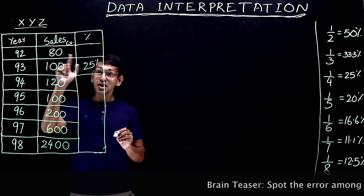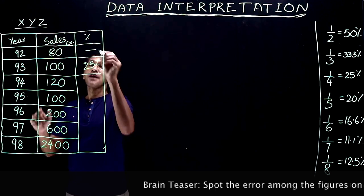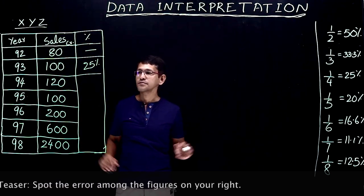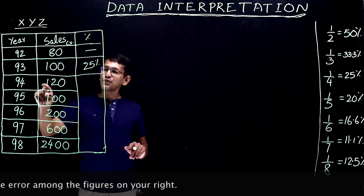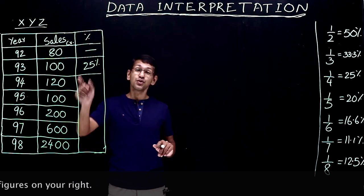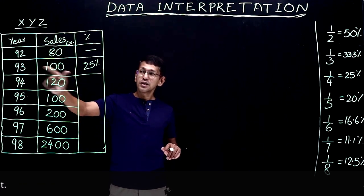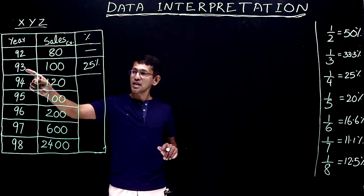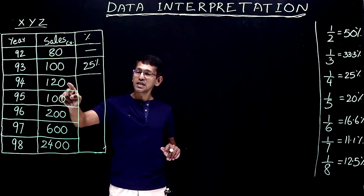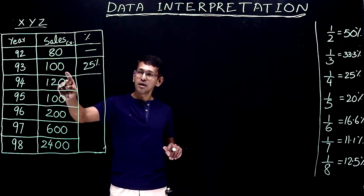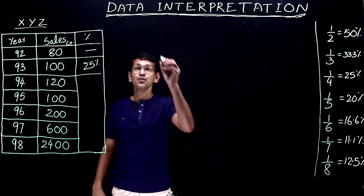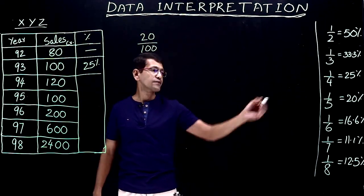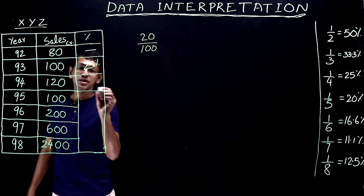That 25% increase happened in the year 93. For year 92, we don't have any increase because the previous figure for year 91 is not given. From 93 to 94, 100 became 120 — a 20 crore increase. The base year here is 93 with a figure of 100 crores, so 20 over 100 is 1 by 5, which is 20 percentage increase.